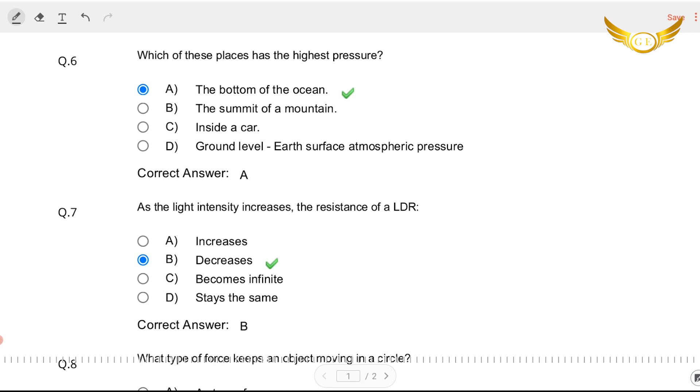The sixth question is which of these places has the highest pressure? The bottom of the ocean, summit of a mountain, inside a car, ground level earth surface atmospheric pressure. Well it is definitely the bottom of the ocean.